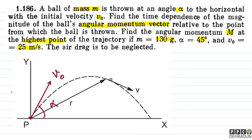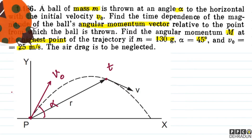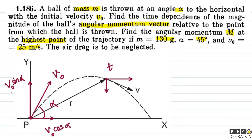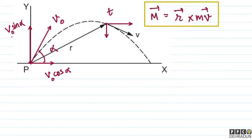So first of all, the position vector from the point of projection to the current location of the ball is r. The angular momentum will be r vector × m into v vector. Now, here our vectors r vector and v vector are to be determined.